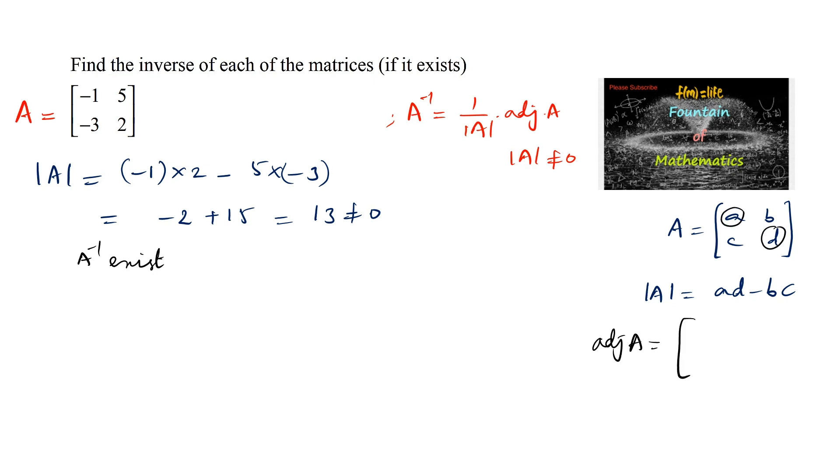interchanging A and D. So we can write here D and A, the diagonal elements, and the remaining elements we have to change the sign: minus B and minus C.